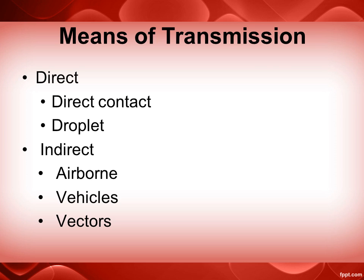Indirect transmission includes airborne, which is when the pathogens are actually suspended in the air. There is also vehicle-borne, which is when an inanimate object indirectly transmits a pathogen. This can include dinnerware, bedding, needles, or surgical scalpels. In some cases, a vehicle may also provide an environment for the pathogen to grow, like botulism in canned products. Indirect transmission can also be vector-borne, where a living organism transmits the pathogen, like a mosquito, fleas, or ticks.